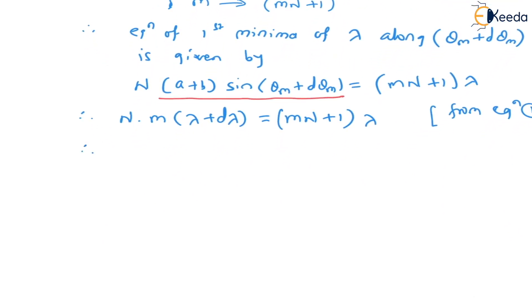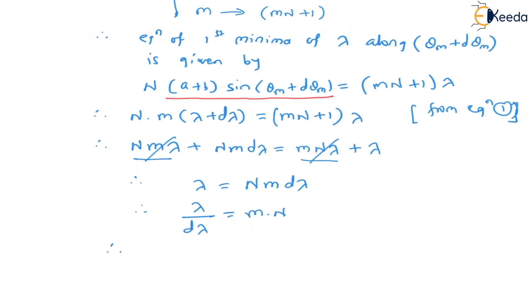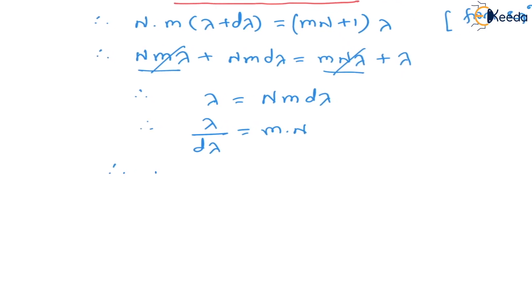Simplifying: N×m×λ + N×m×dλ = m×N×λ + m×λ. The N×m×λ terms cancel from both sides, leaving: N×m×dλ = m×λ. Therefore λ/dλ = m×N. Since λ/dλ is the resolving power, we have: Resolving power of grating = λ/dλ = m × N.